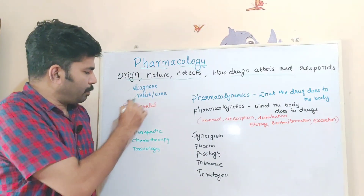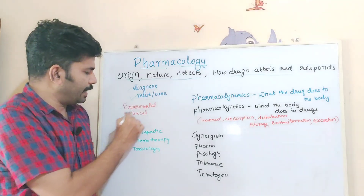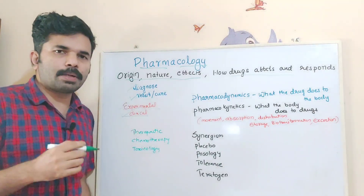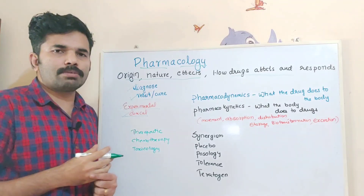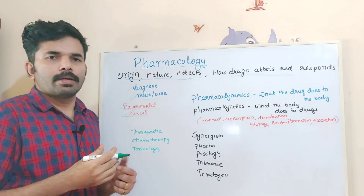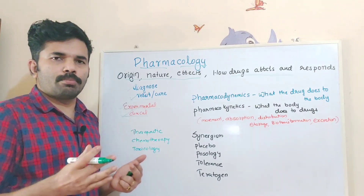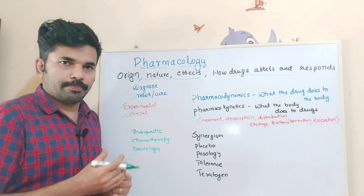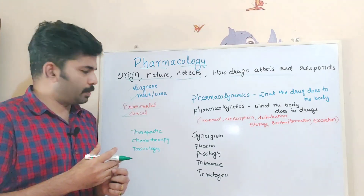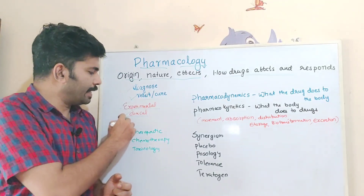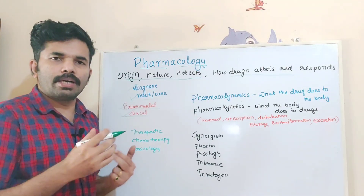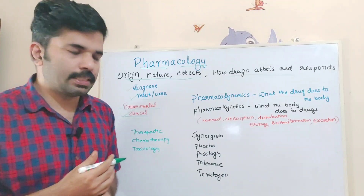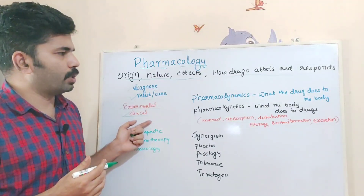We divide pharmacology into experimental and clinical pharmacology. Experimental pharmacology involves administering drugs to animals in experiments. Clinical pharmacology involves administering drugs to patients in the hospital, either by injection or oral administration.